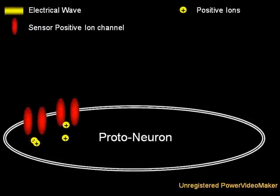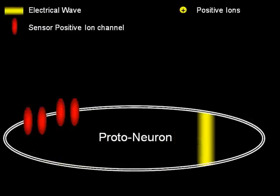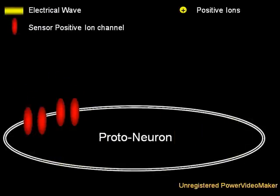In order to start an electrical wave, an ion channel is needed. Ion channels are proteins in the cell membrane that allow one or more types of ions to move in or out of the cell in response to a particular stimulus.